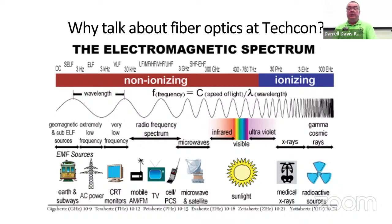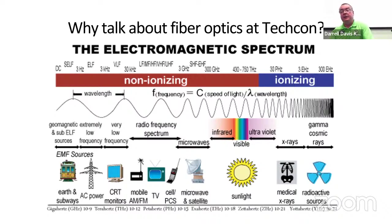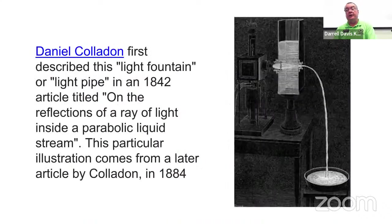So why talk about fiber optics here? Well, light is part of the electromagnetic spectrum, and you can see visible light up at 430 to 750 terahertz. We're usually down in the radio frequency spectrum at 30 to 3 gigahertz, but it's still on the same spectrum — the basic physics apply no matter what frequency we're talking about. I thought it might be interesting to broaden your perspective: what we think of as radio waves are also light waves.